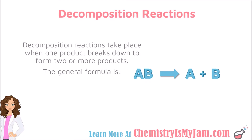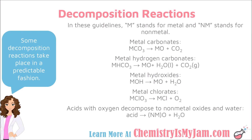Decomposition reactions are like the opposite of synthesis reactions. You start with one reactant and it breaks apart into two or more products. These are a little bit more difficult to predict because you can have multiple products. There are some trends that help us predict the products formed in a decomposition reaction — these are some guidelines. In these guidelines, any time you see a capital M, that stands for some metal. And any time you see a capital NM, that stands for a nonmetal.